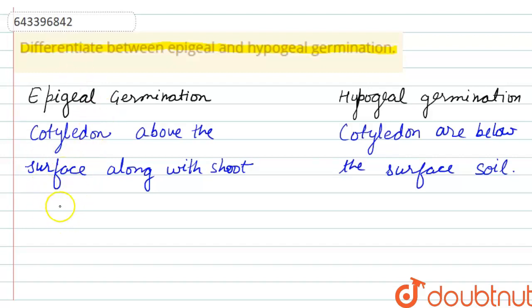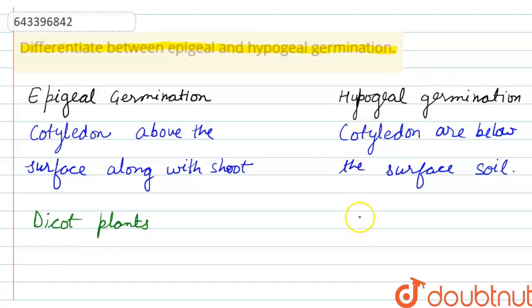Epigeal germination mostly occurs in dicot plants, while hypogeal germination mostly occurs in monocot plants.